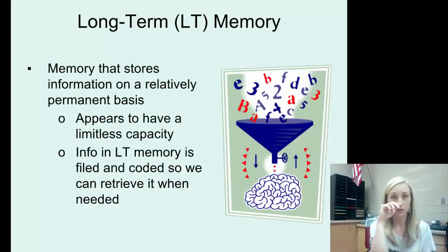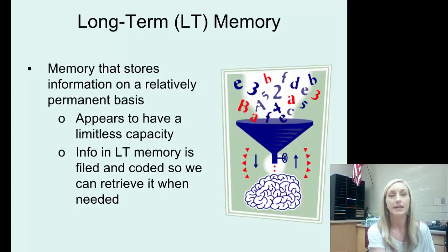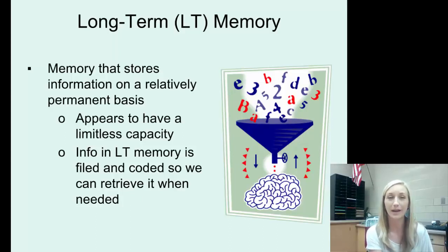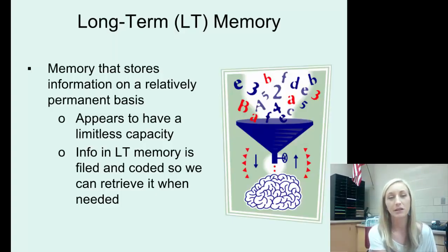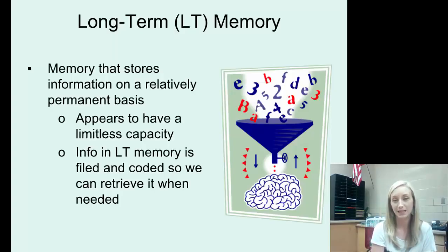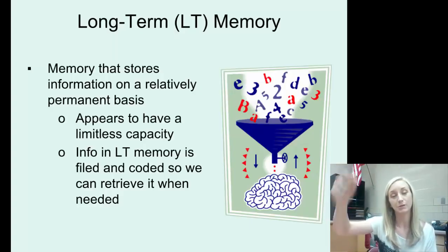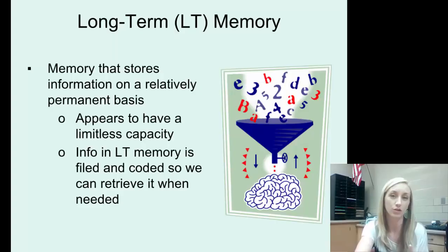The final process is long-term memory — memory that stores information on a relatively permanent basis. Your long-term memory is limitless; it appears to have a limitless capacity, and you really can store everything in there. It's just a matter of whether you're truly getting the information in and keeping it there. Information in long-term memory is filed and coded so we can retrieve it when needed, and certain things called cues allow us to remember and retrieve things from long-term memory.